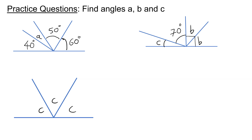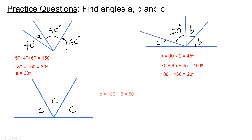Here are the answers. A should be 30. B should be 45 degrees. And C should be 20 degrees. And in the last question, C should be 180 divided by 3, which is 60 degrees.